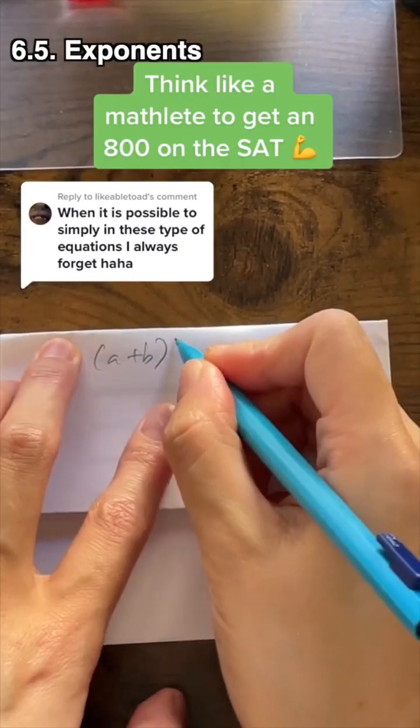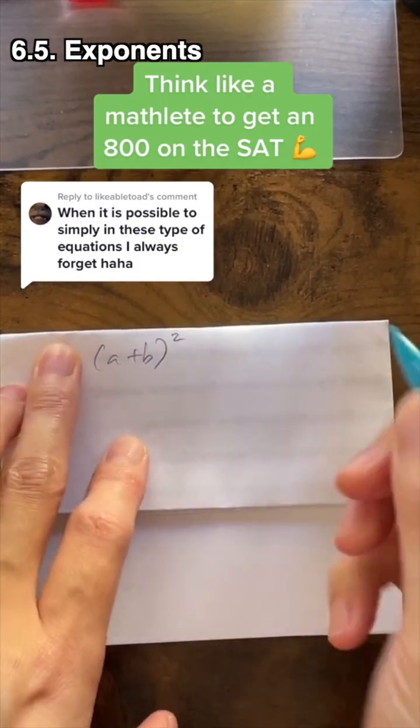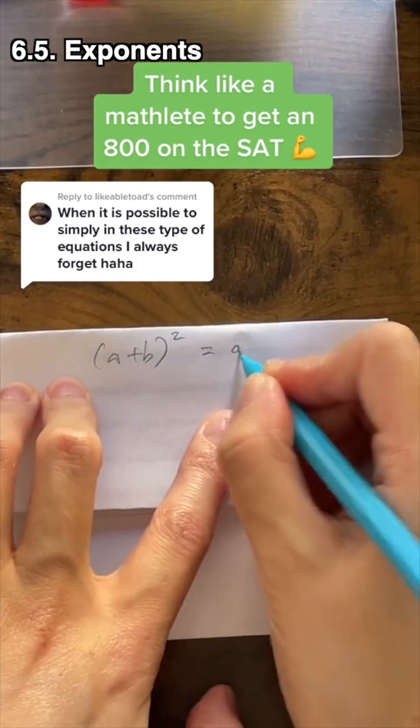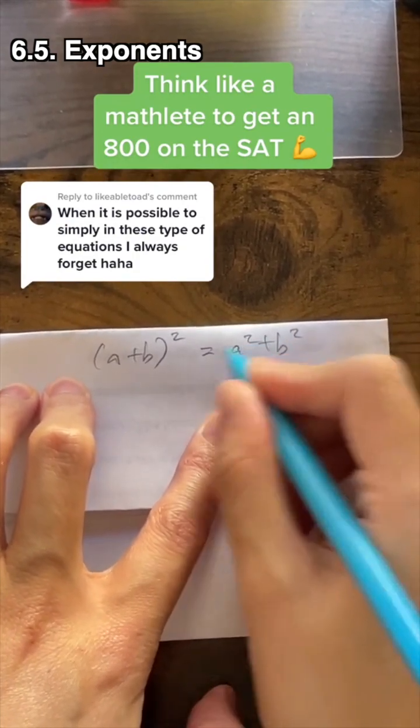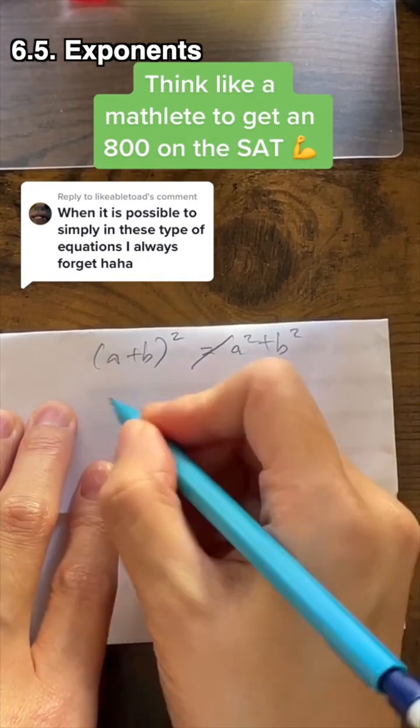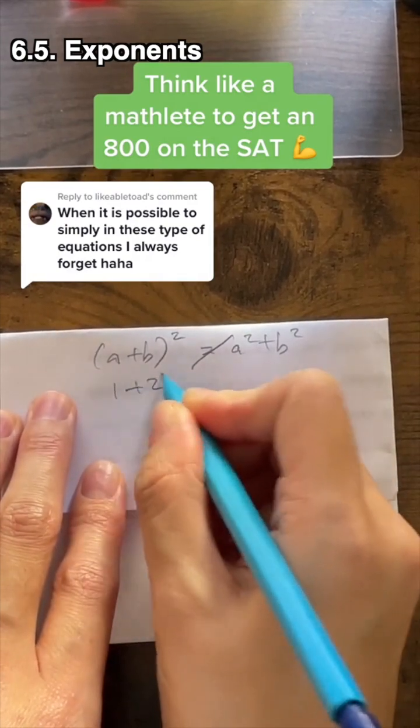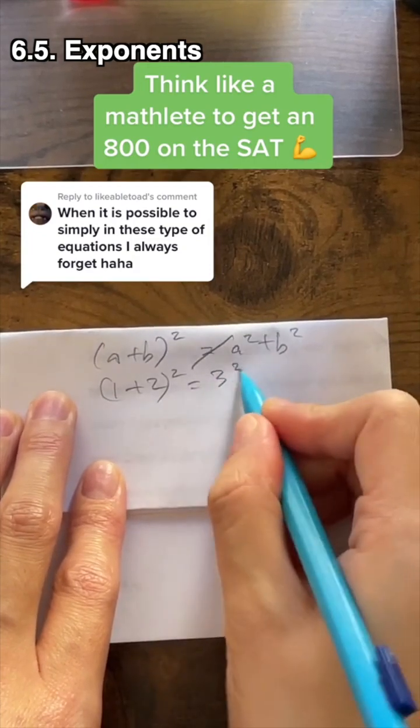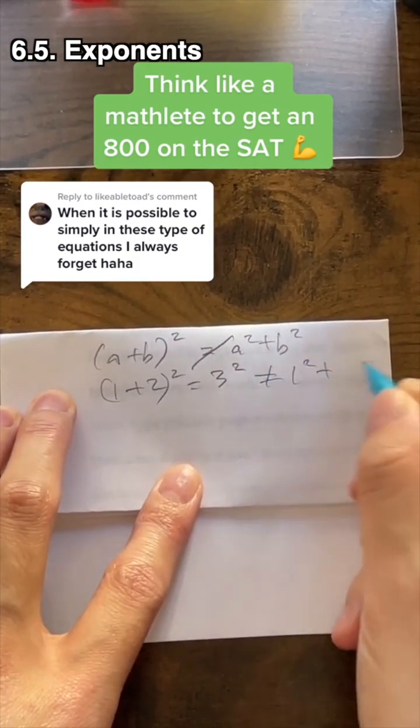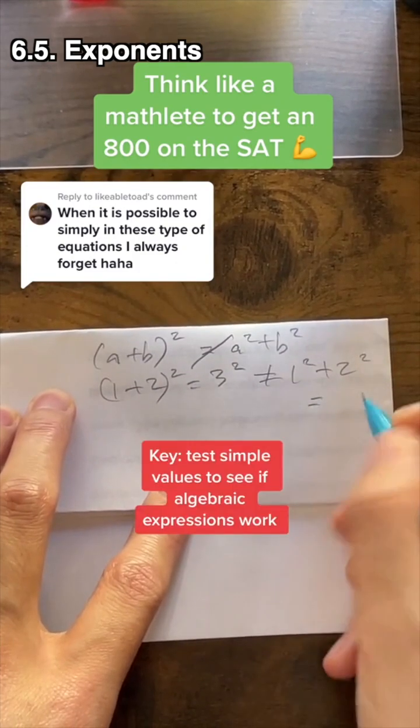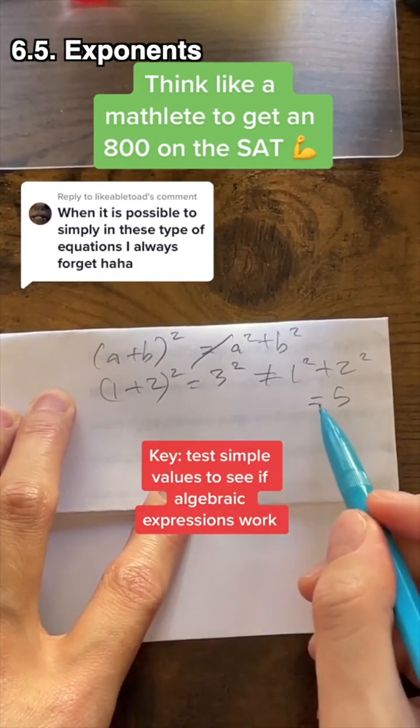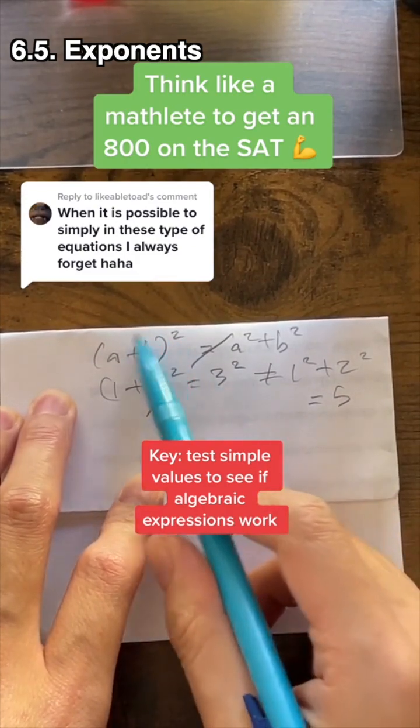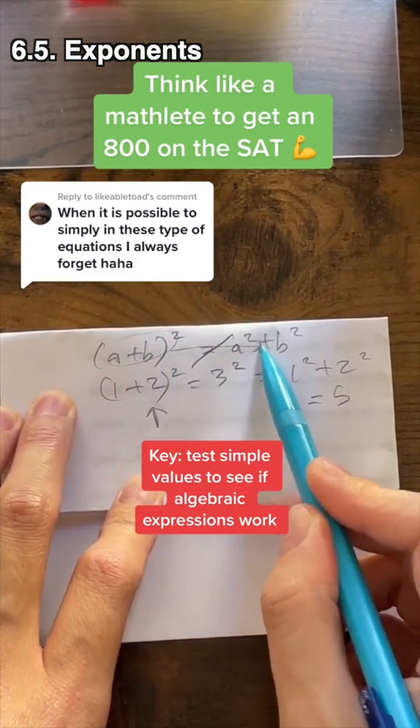It's not about forgetting things because it's not about memorizing things. So why can you not do this equals a squared plus b squared? If you just use simple numbers and make a equals 1 and b equals 2, you see that this is supposed to be 3 squared, which is not the same as 1 squared plus 2 squared, and that's 5. So always try numbers yourself when you forget and know why this is not something that you can make in algebra.